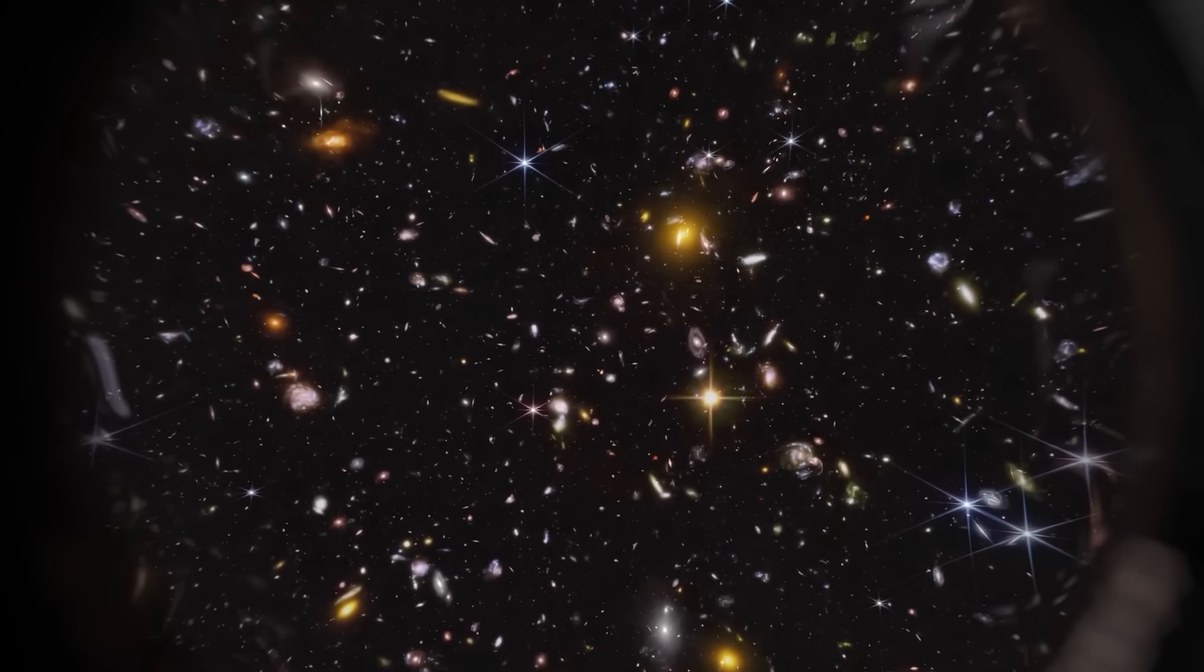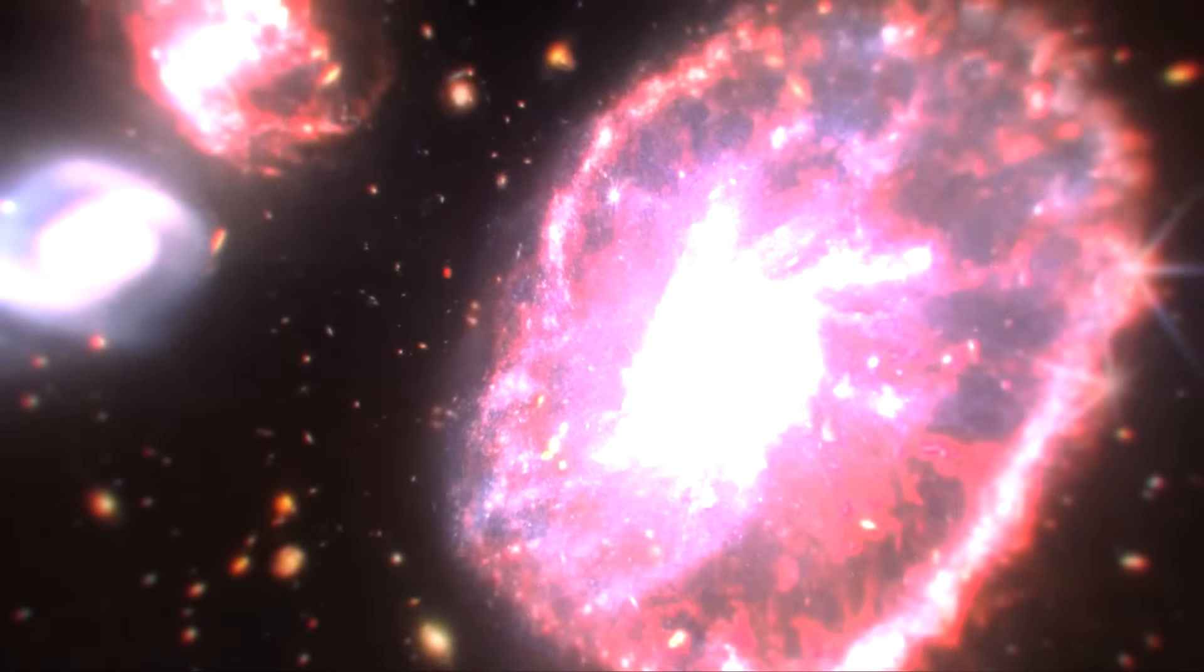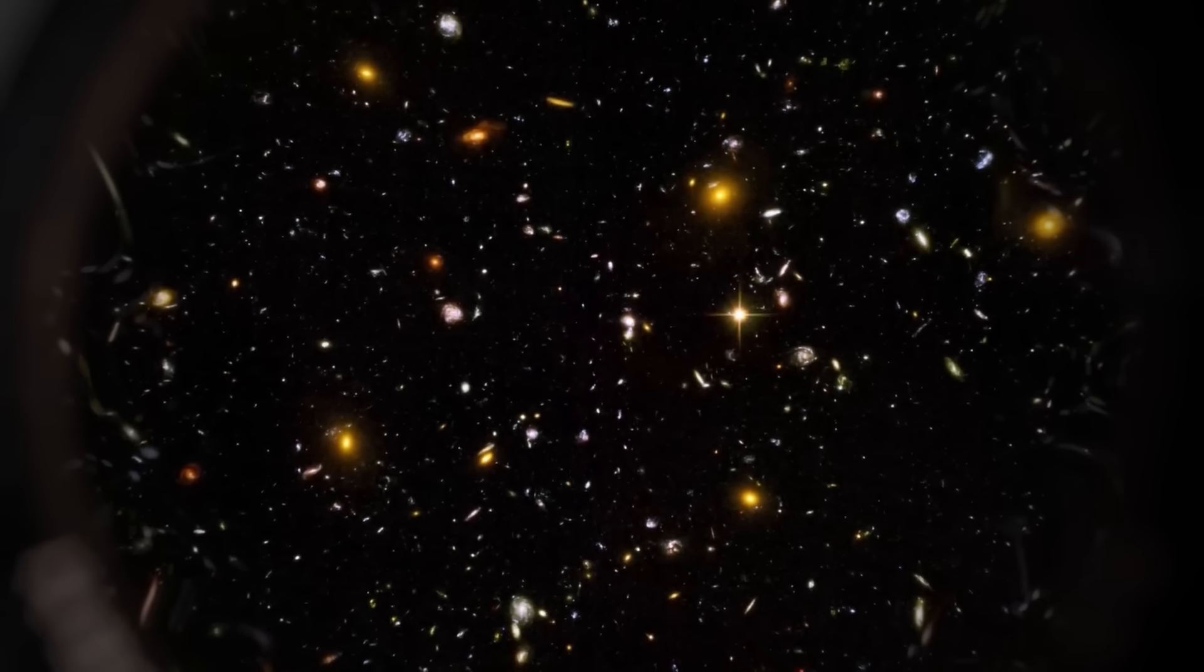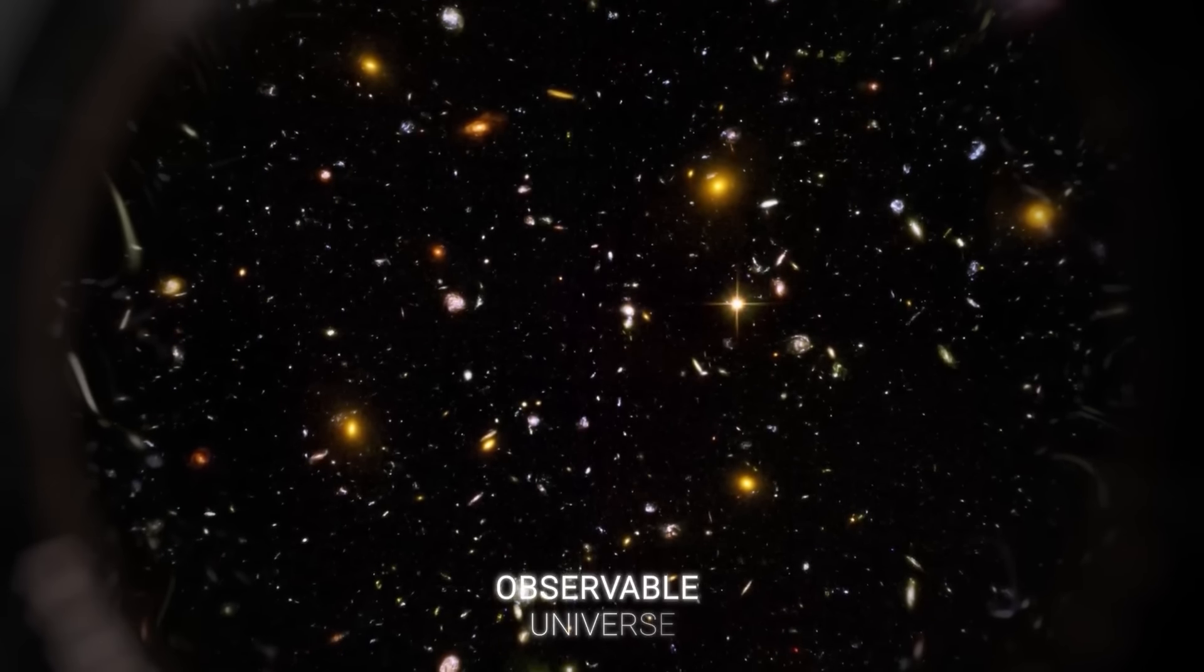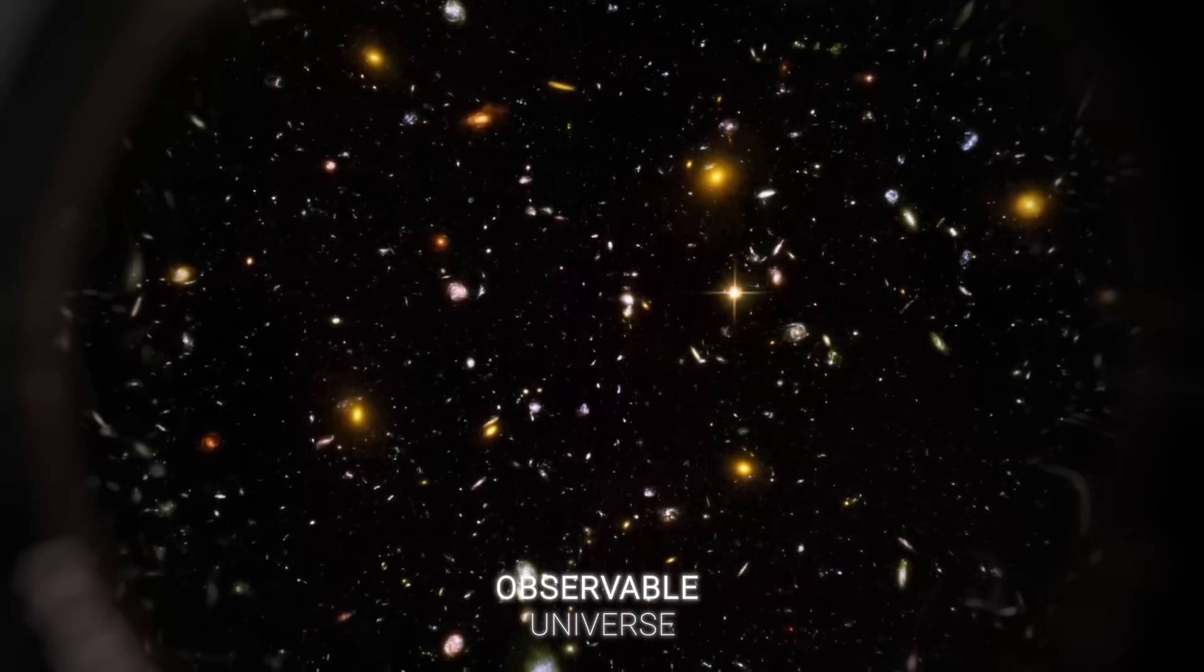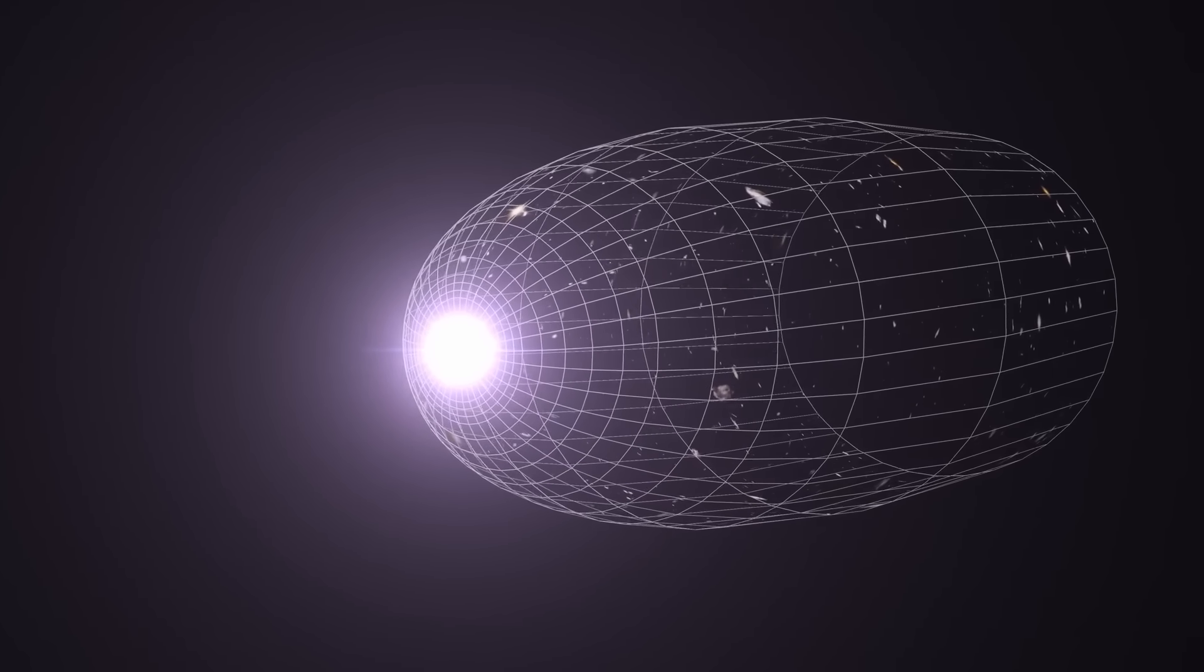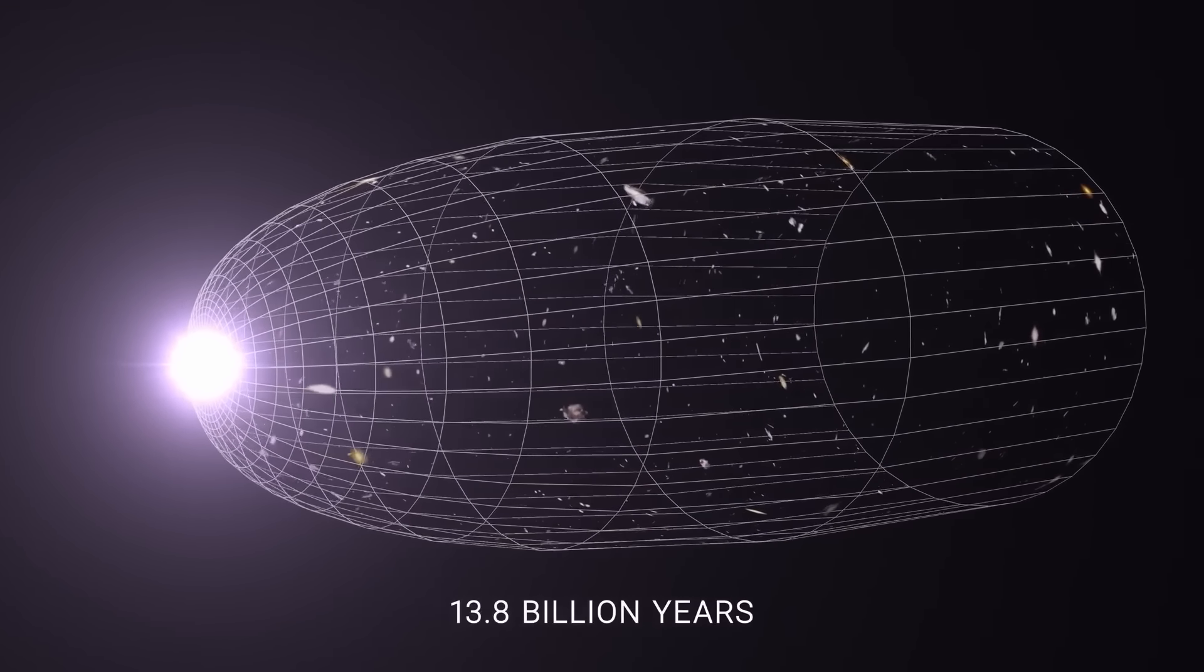This visibility is constrained by the speed of light. Since light has a finite speed, the farther away an object is, the longer it takes for its light to reach us. Therefore, our observational limits are set by the distance light has traveled since the beginning of the universe, approximately 13.75 billion years ago.